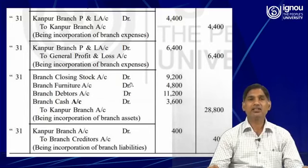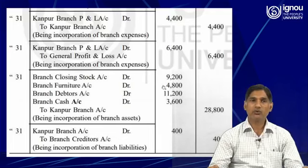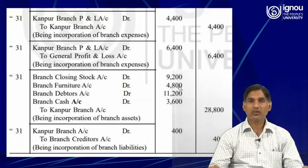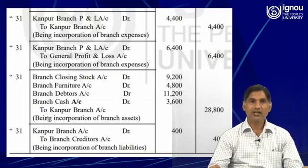Therefore, the individual assets will be debited. Closing stock is given in the adjustment as 9,200; furniture 4,800 is given in the trial balance; debtors 11,200 is given in the adjustment.